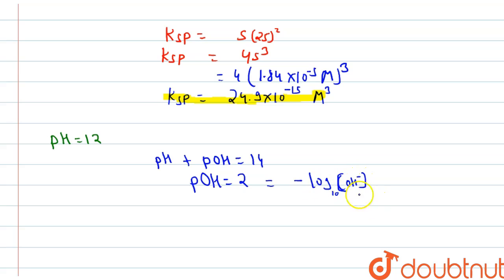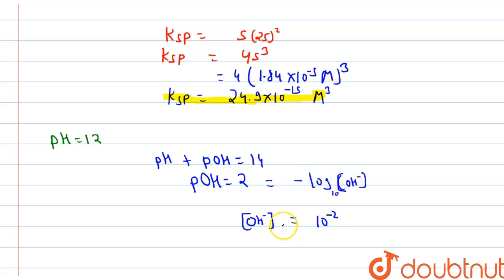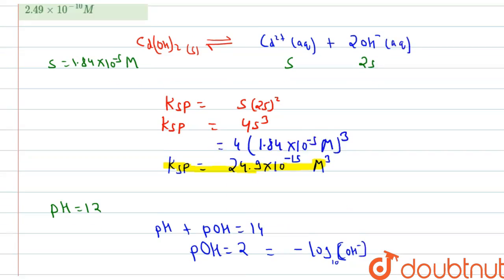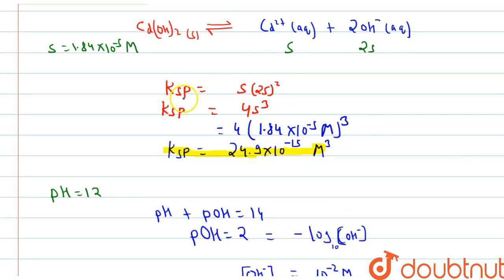From pOH = 2, we get [OH⁻] = 10⁻² molar. This value will be useful to solve the question. We can also write Ksp = [Cd²⁺] × [OH⁻]².